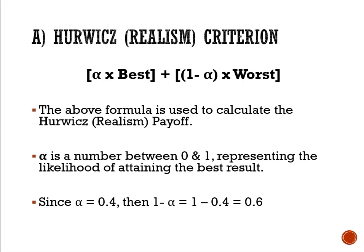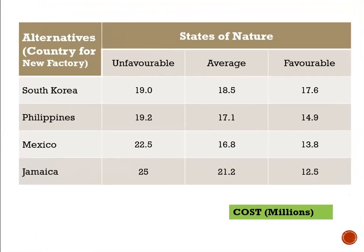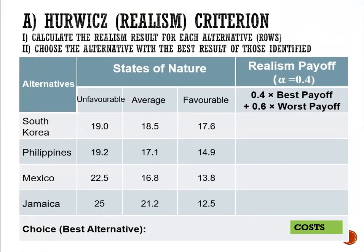Since alpha is equal to 0.4, then 1 minus alpha will be equal to 1 minus 0.4, or 0.6. Looking at our payoff table for selecting a country for our new factory, considering the alternatives: South Korea, Philippines, Mexico, or Jamaica. For step 1, we calculate the realism payoff for each alternative.